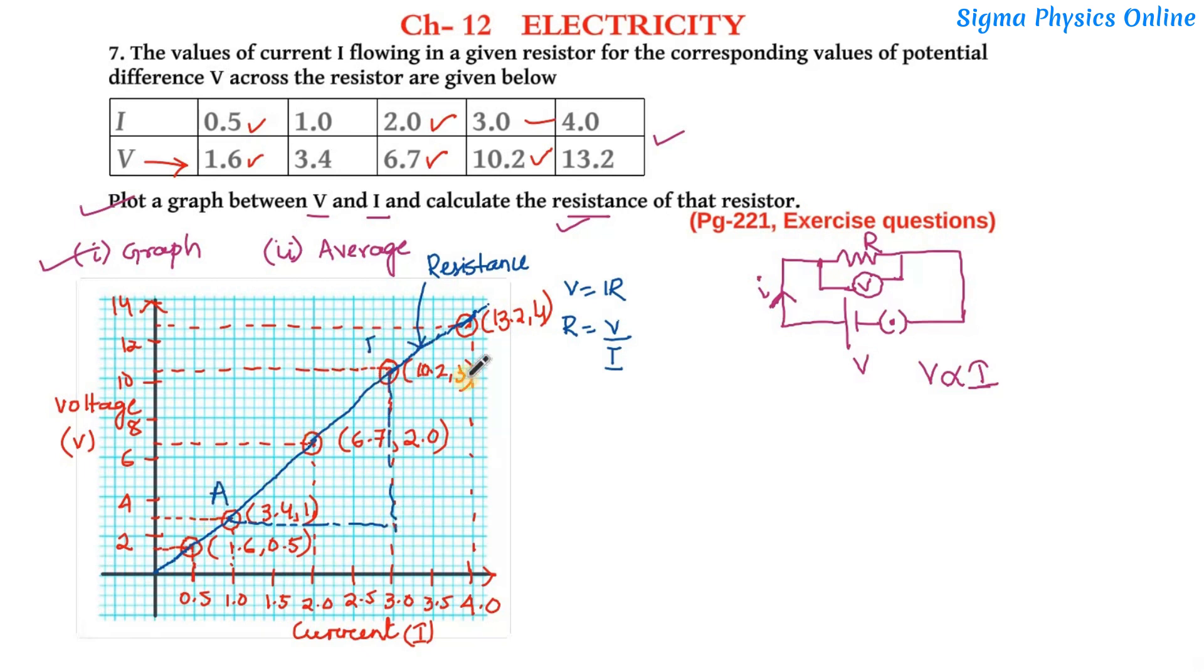These two points, let's say this is point A and this is point B. Now the potential difference between point B and A, so it will be VB minus VA by the current at point B minus current at point A.